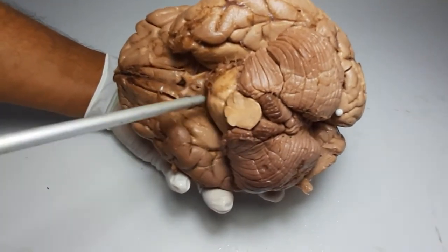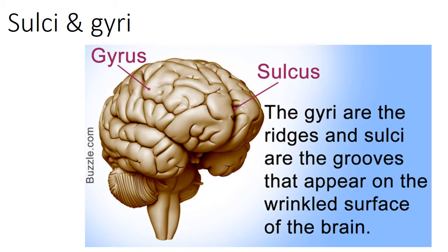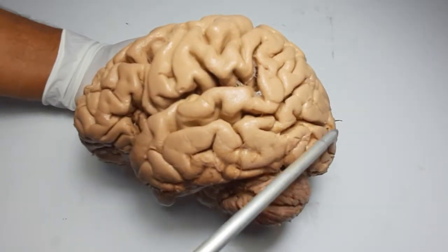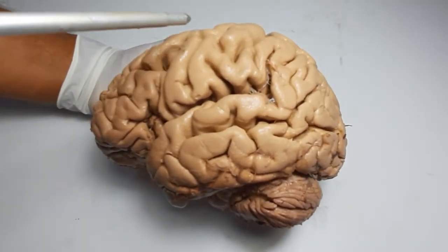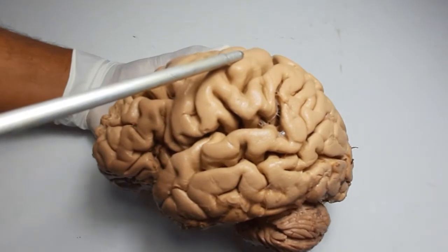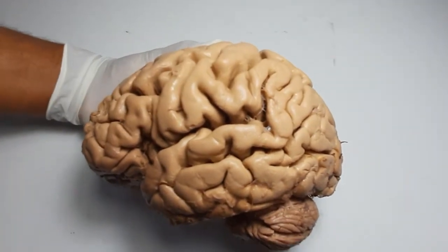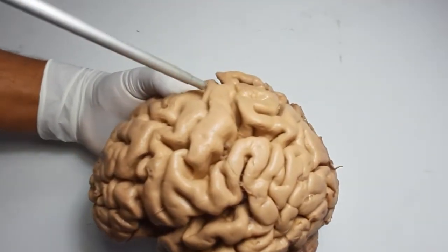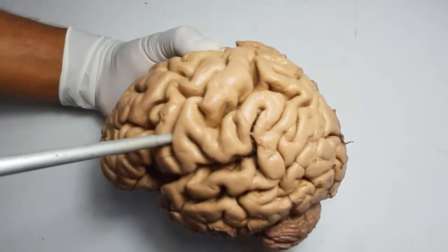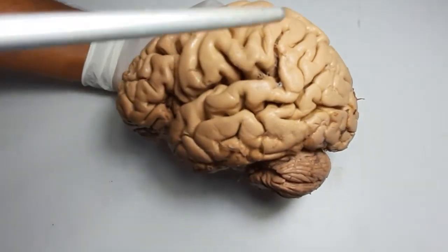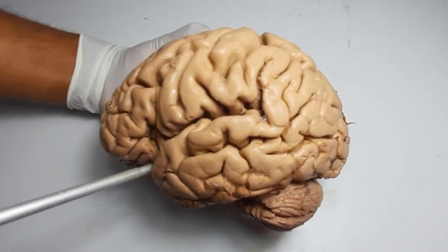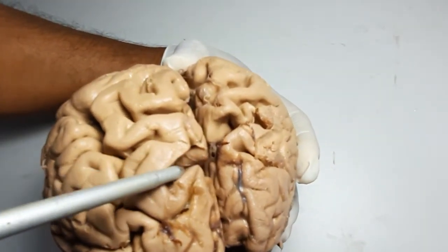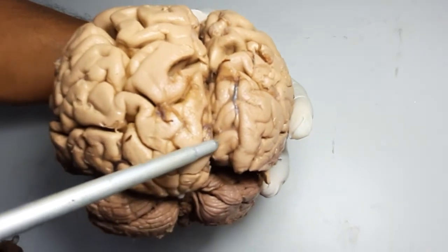This is the brainstem area. The surface of the brain has sulci and gyri. Some sulci are given names: this is the central sulcus, this is the lateral sulcus, this is the parietooccipital sulcus, and this is the calcarine sulcus.